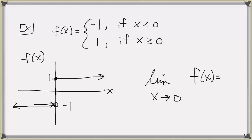They're actually equal to negative 1 for all values slightly less than 0. For the left-hand limit, we put a minus sign as an exponent on the limiting value of x. This notation is read: the limit of f of x as x approaches 0 from the left. In this case, you only consider values of x slightly to the left of 0 — small negative numbers. The limit of this function as x approaches 0 from the left is negative 1.